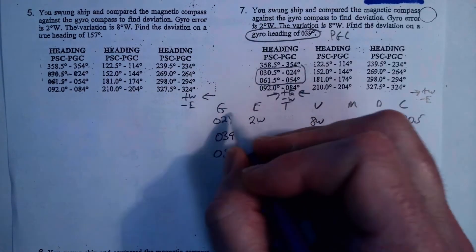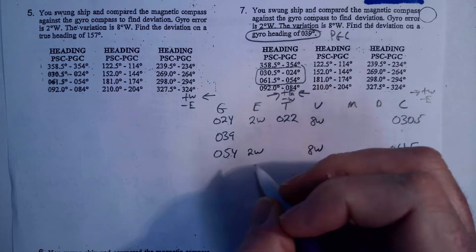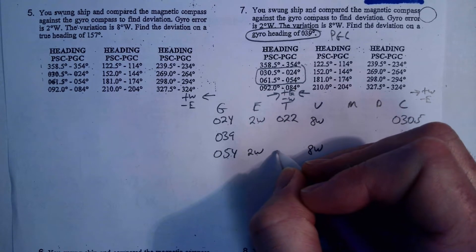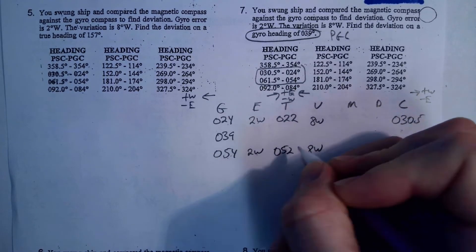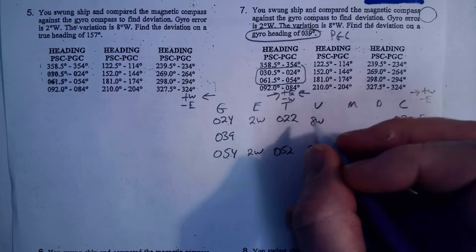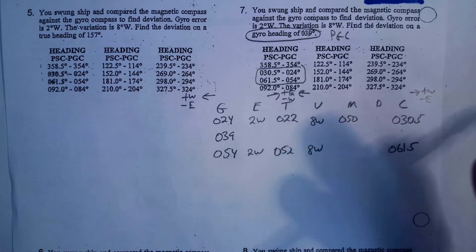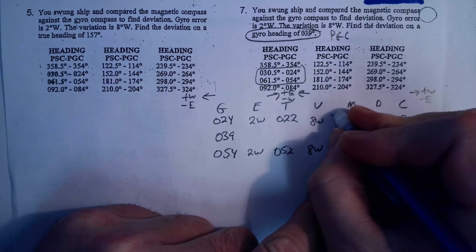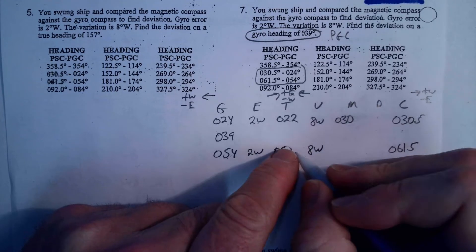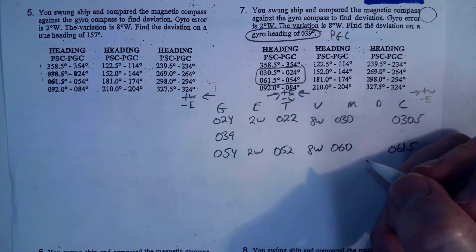So, 2 west, 24, I'm going towards true. So, if I have west, I subtract it, so that becomes 022. So, 054, it's west. I'm going towards true. I'm going to subtract west, so that becomes 052. Now, I'm on the other side of true, and I'm headed towards a compass. So, that rule is plus west, so that becomes 050, and this becomes, excuse me, that becomes 030. So, plus 8 is 030, and 52 plus 8 is 060.